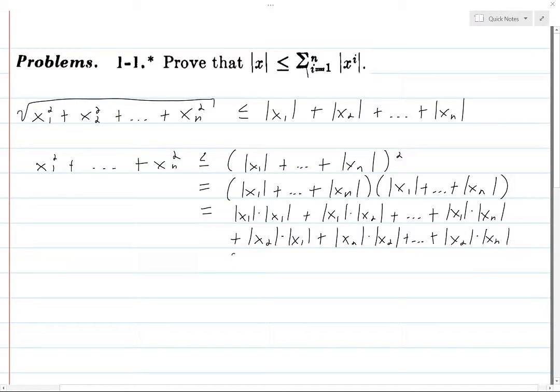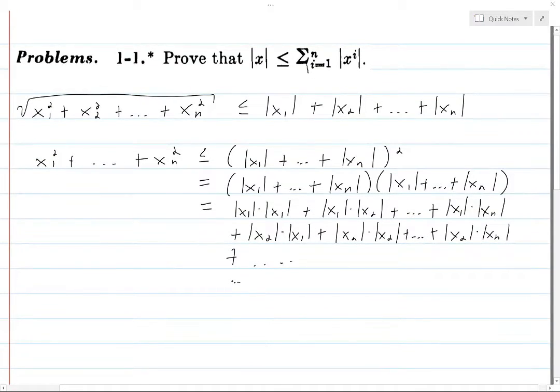And then we're going to do the same thing with x₃, and so on and so forth. And eventually we're going to do the same thing with xₙ. So it's going to be plus xₙ x₁ plus xₙ x₂, all the way up to xₙ xₙ.